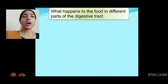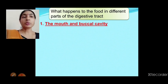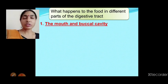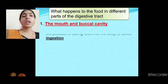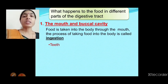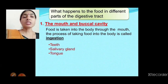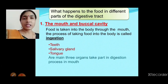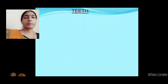What happens to the food in each part of the digestive tract? The first one is the mouth or buccal cavity. Our digestion process starts from the mouth — when we take food into our body, this process is called ingestion. Inside the body, three parts of the mouth help with digestion: teeth, tongue, and salivary gland.